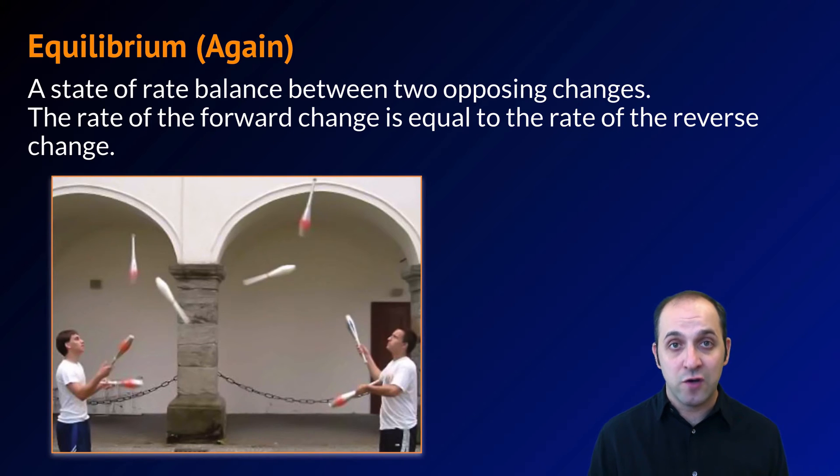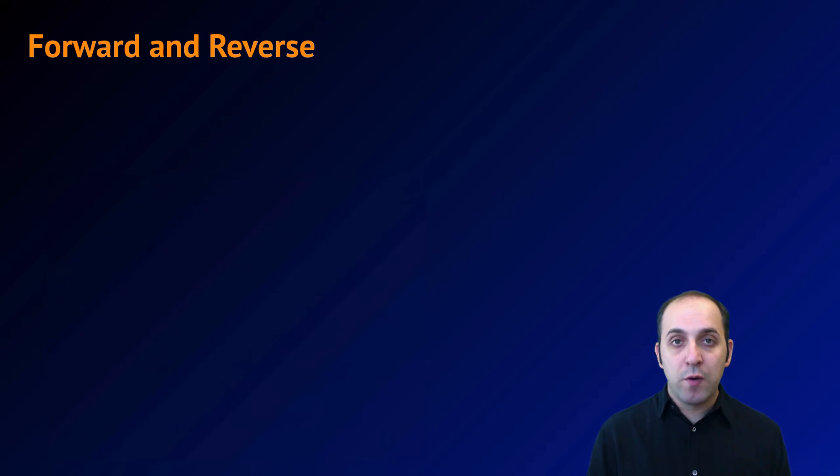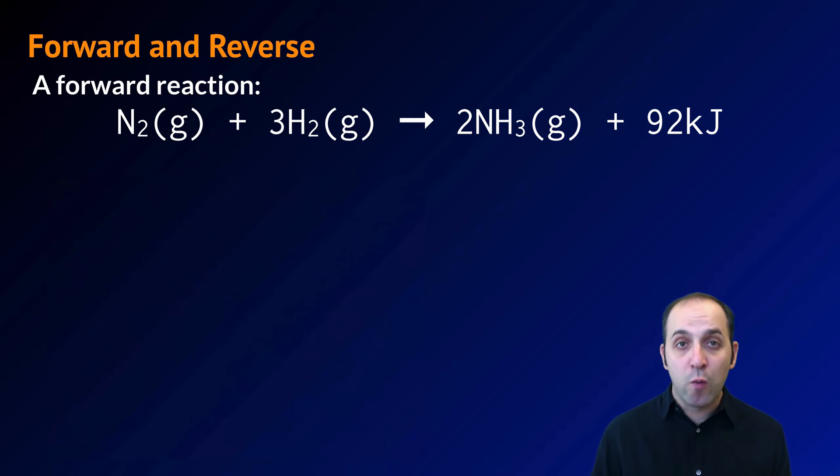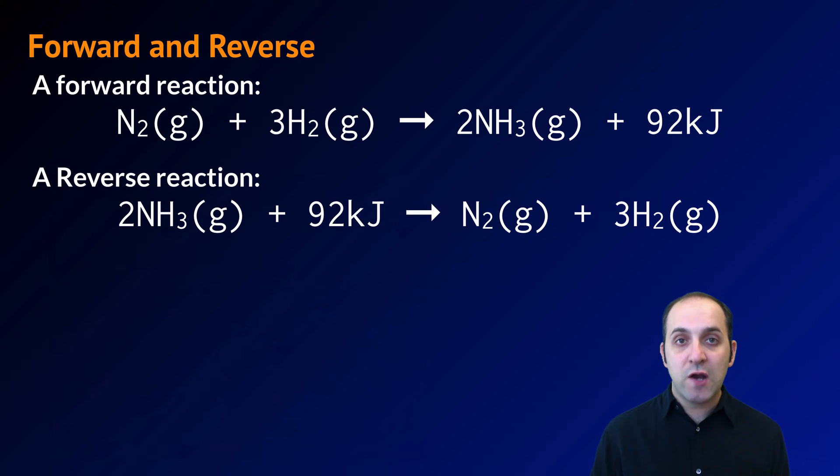What we're talking about here are just the specific chemistry examples that we should pay attention to. In order to get a handle on equilibrium, we should talk about a little bit of terminology. The first is this notion of forward and reverse processes. Here's a forward reaction.